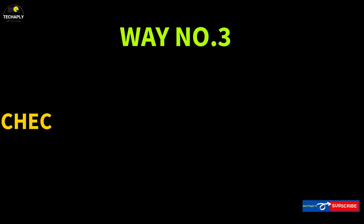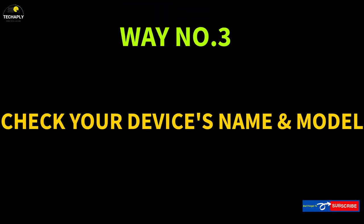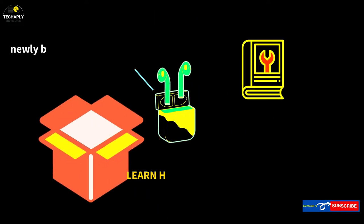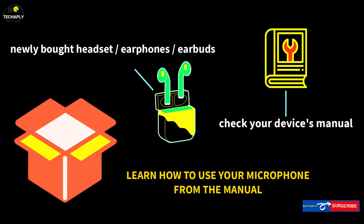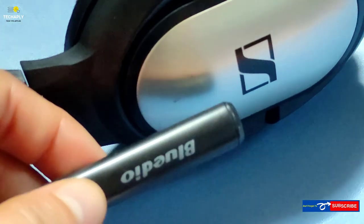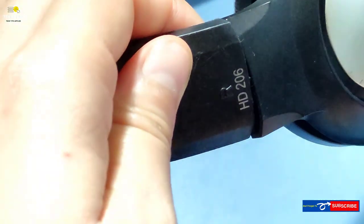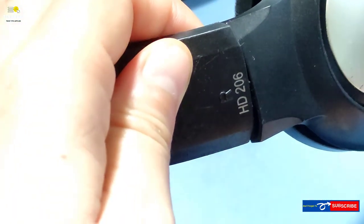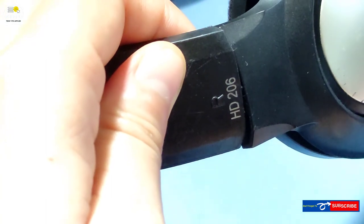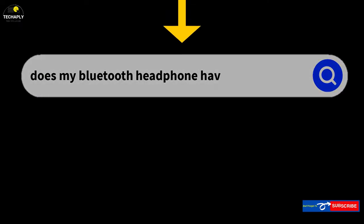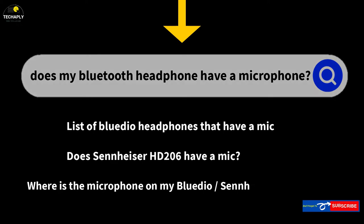Way number three: check if your device has a microphone through your device name and model's info. If you've bought your device recently, it's easy to check its manual page for info about the microphone and how to use it. If you've had your device for a long time and forgotten its model, search for its name anywhere on your device. After you've got your device name and model, do some searches on its microphone info.